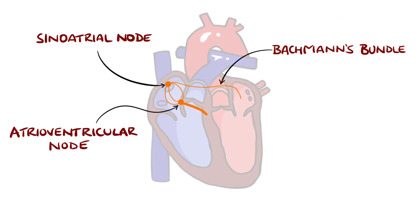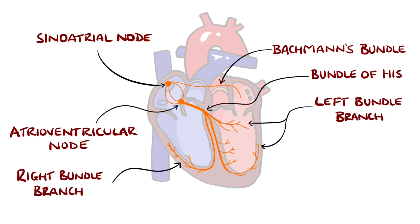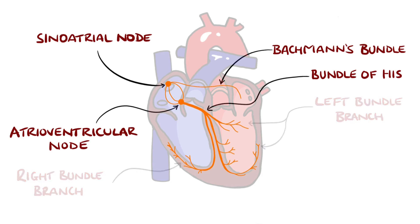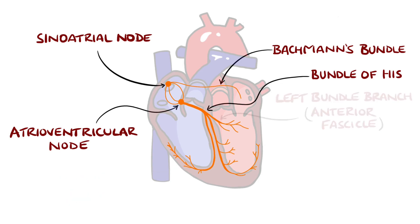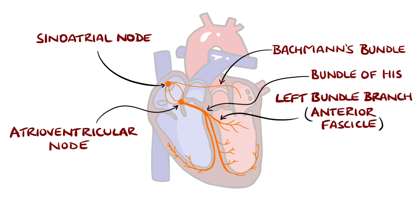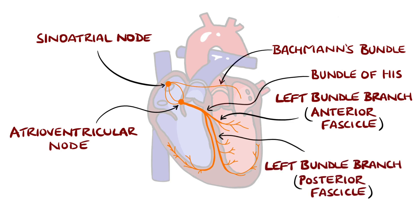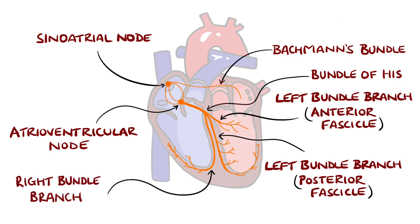From here, it travels down to the bundle of His, which then divides into the left and right bundle branches, followed by the Purkinje fibres on both sides, ultimately causing contraction of the ventricles. The left bundle divides into the anterior, posterior, and in some instances the septal fascicles, whereas the right bundle does not have other fascicles.